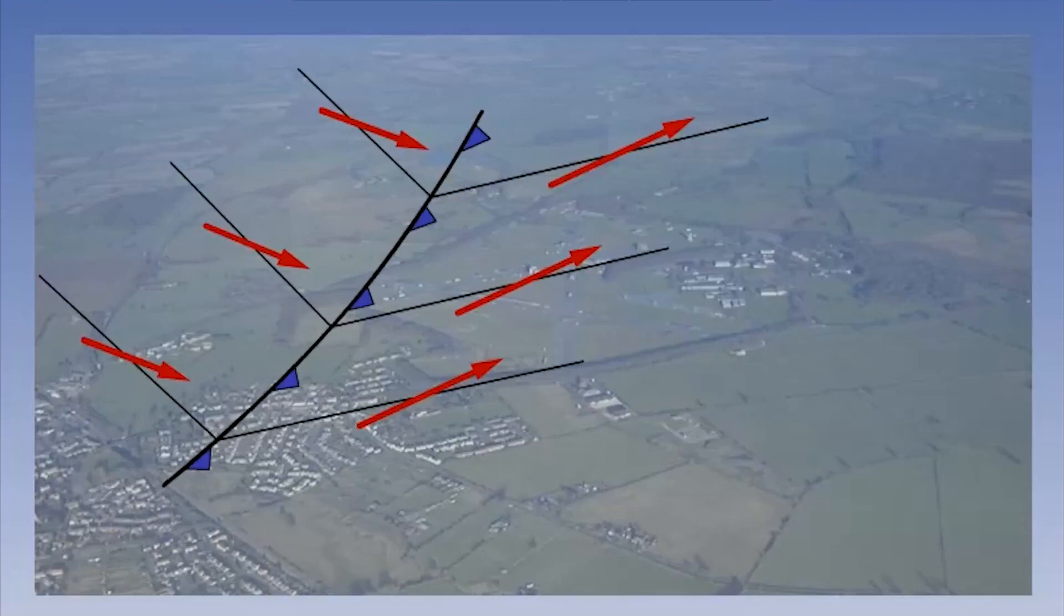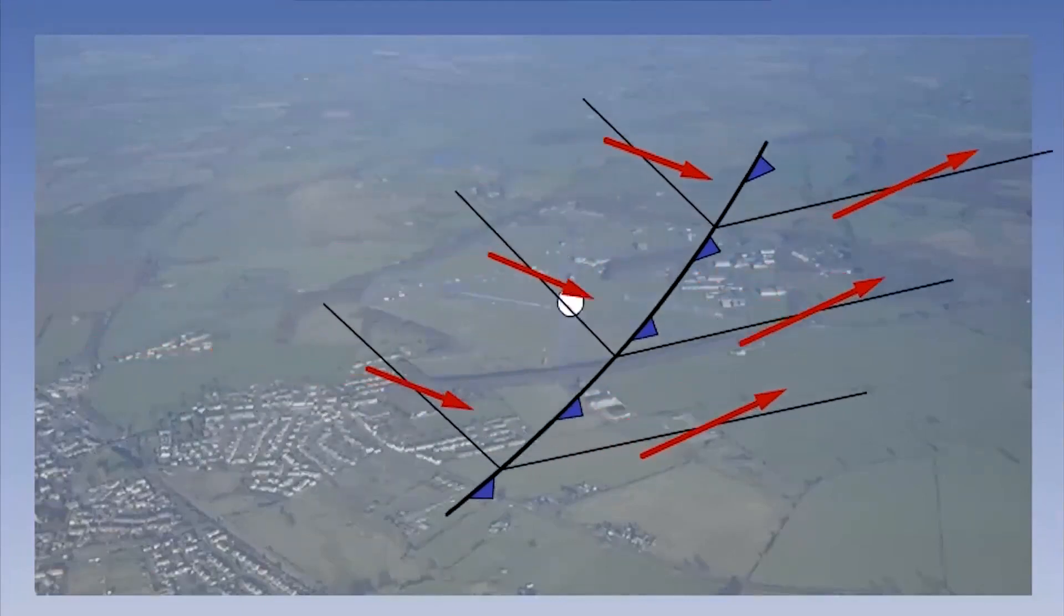In the diagram, we can see a location in the northern hemisphere which is about to experience the passage of an active cold front. The initial wind direction is from the southwest. But as the front passes, the wind direction changes quite rapidly to flow from the northwest.